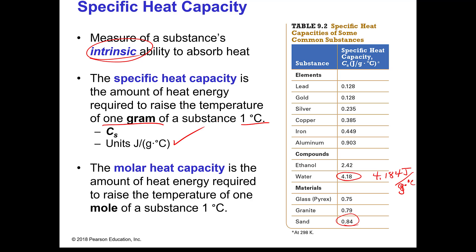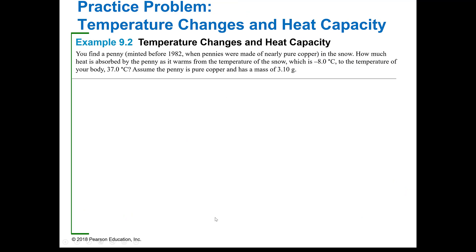The molar heat capacity is how much energy it takes to raise the temperature of one mole by one degree C. So you have specific heat capacity — which is per gram — and molar heat capacity — which is per mole. All right, let's do a problem.